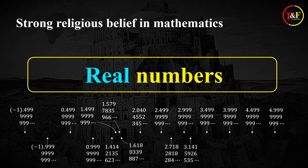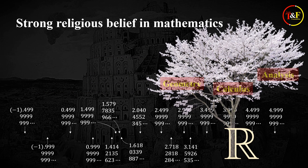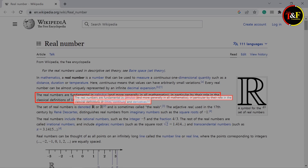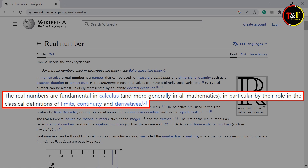The thing is that these real numbers are not just one of those concepts in mathematics, but are playing the most fundamental role in modern mathematics and science. This, of course, is not coincidental either. To put it simply, this is because of their fundamental role in defining continuity. Let's look at Wikipedia. It says the real numbers are fundamental in calculus and more generally in all mathematics, in particular by their role in the classical definitions of limits, continuity, and derivatives.